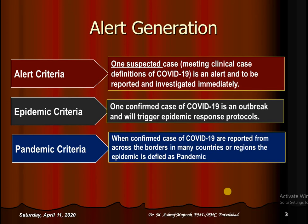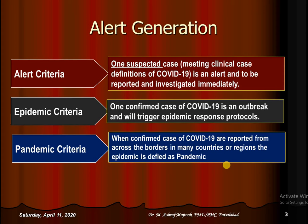Health alert generation. For COVID-19, a suspect case meeting the clinical case definition of COVID-19 is an alert and is to be reported and investigated immediately. For epidemic criteria, one confirmed case is sufficient to trigger the epidemic in a given territory. If confirmed cases of COVID-19 are reported from across countries, it will be declared as an epidemic, as WHO already declared on 11th March that COVID-19 is a deadly pandemic and a great threat to humanity.